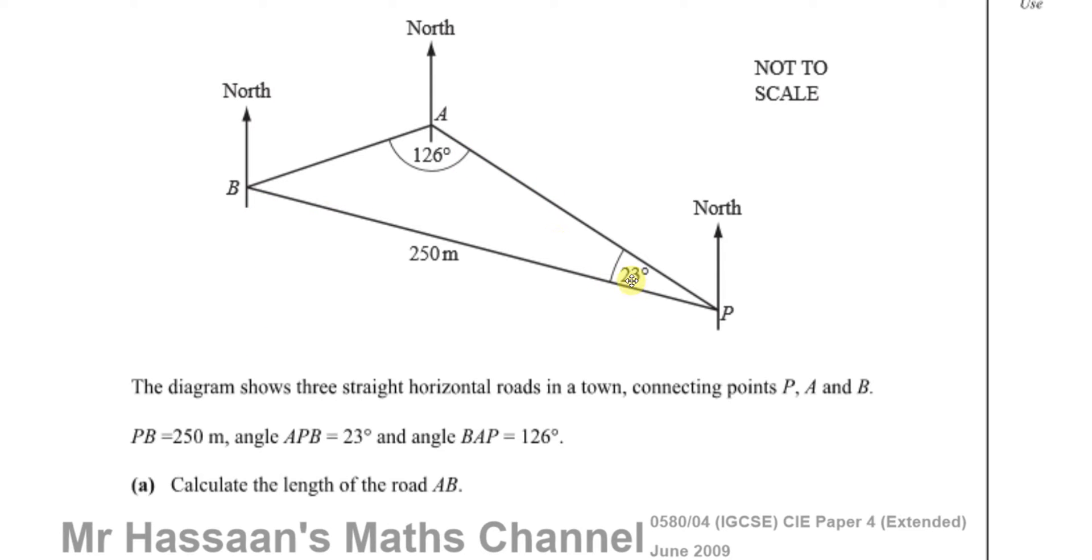Angle APB is 23 degrees and BAP is 126 degrees. Part A asks: Calculate the length of the road AB.